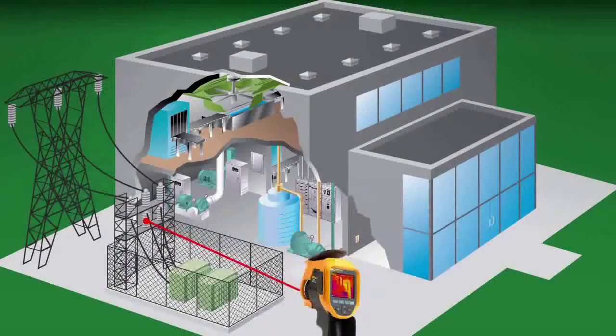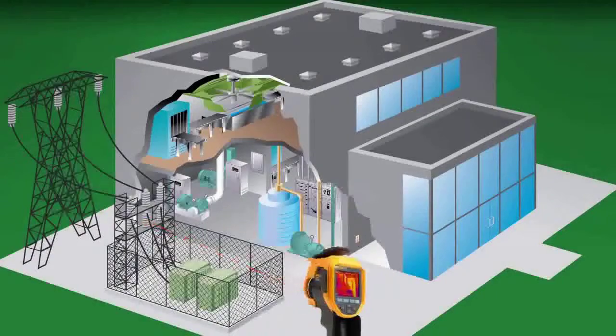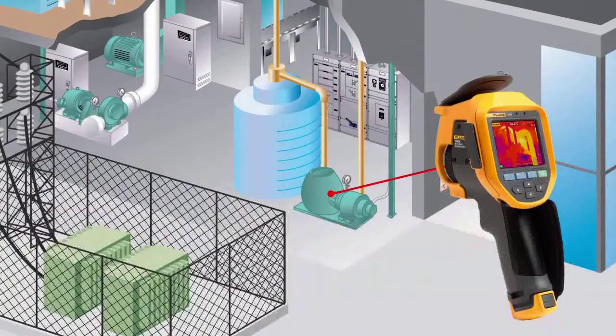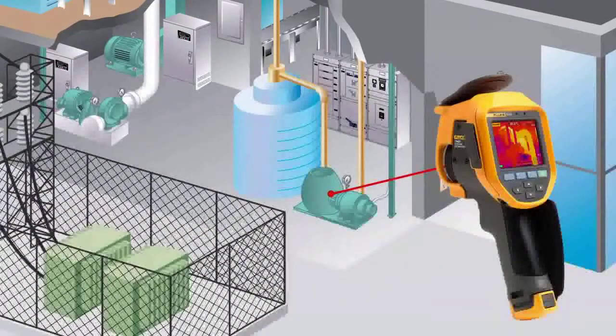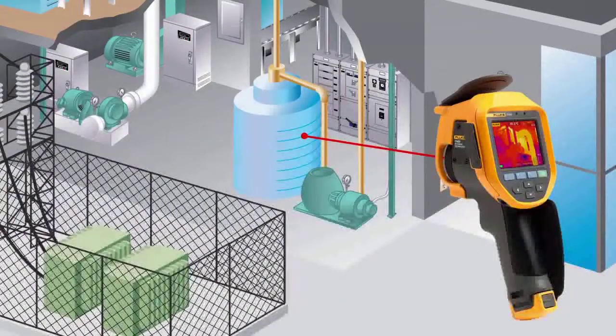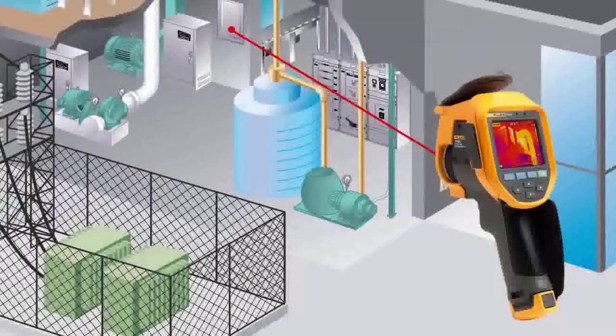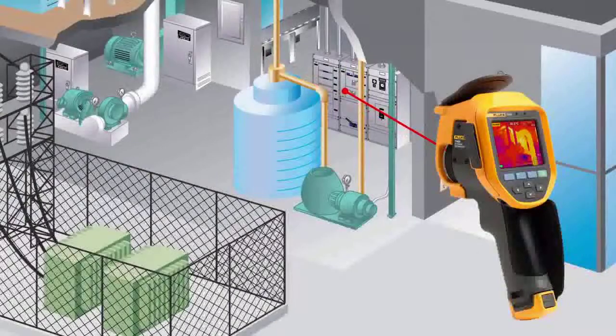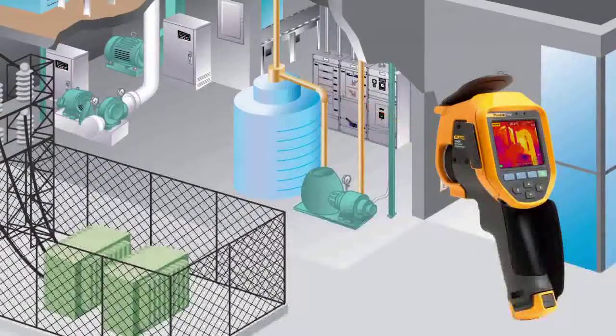It uses a laser to calculate the distance before it focuses. You place the red laser dot on the object you are inspecting, then you pull the trigger for an in-focus infrared image every single time.